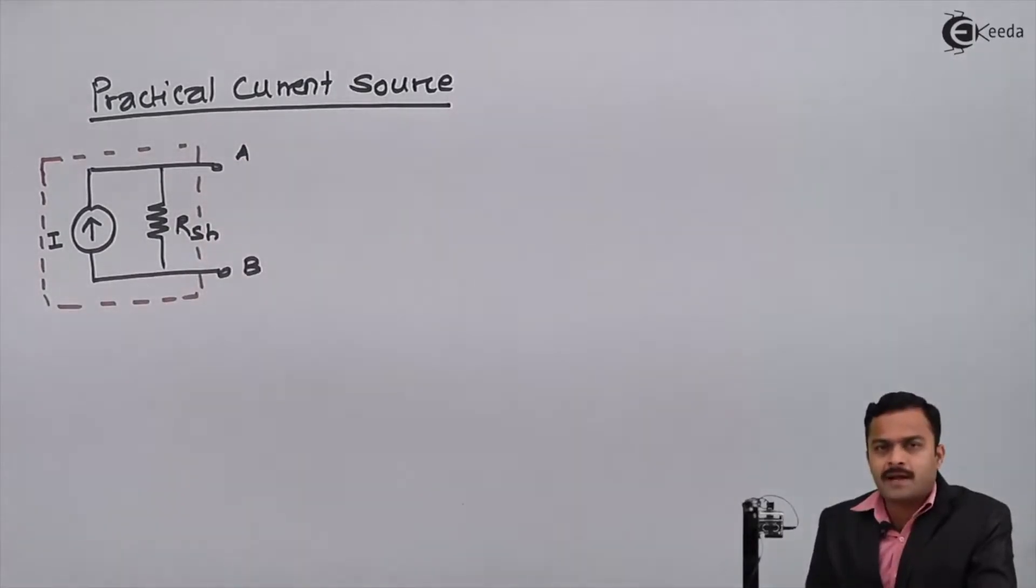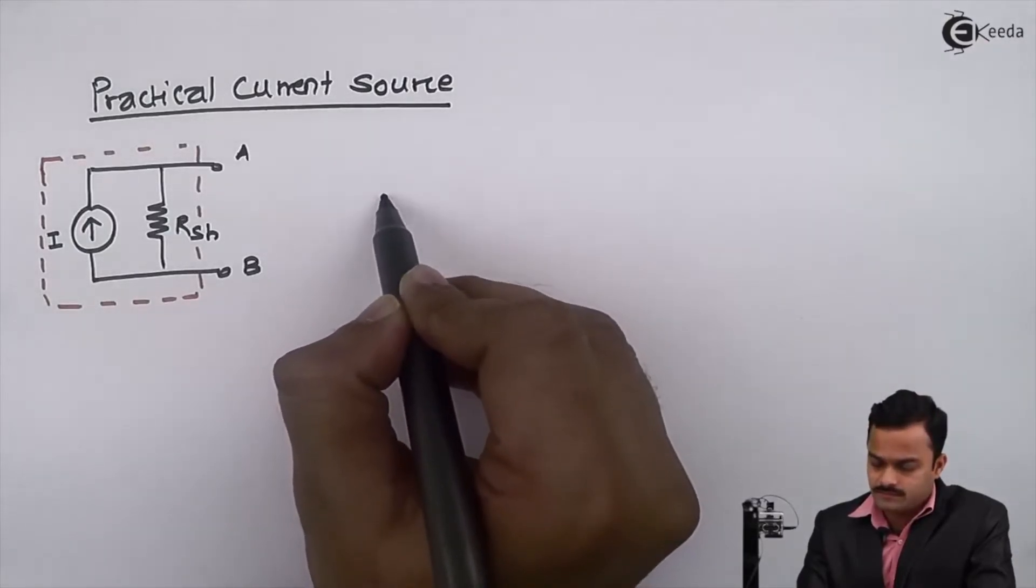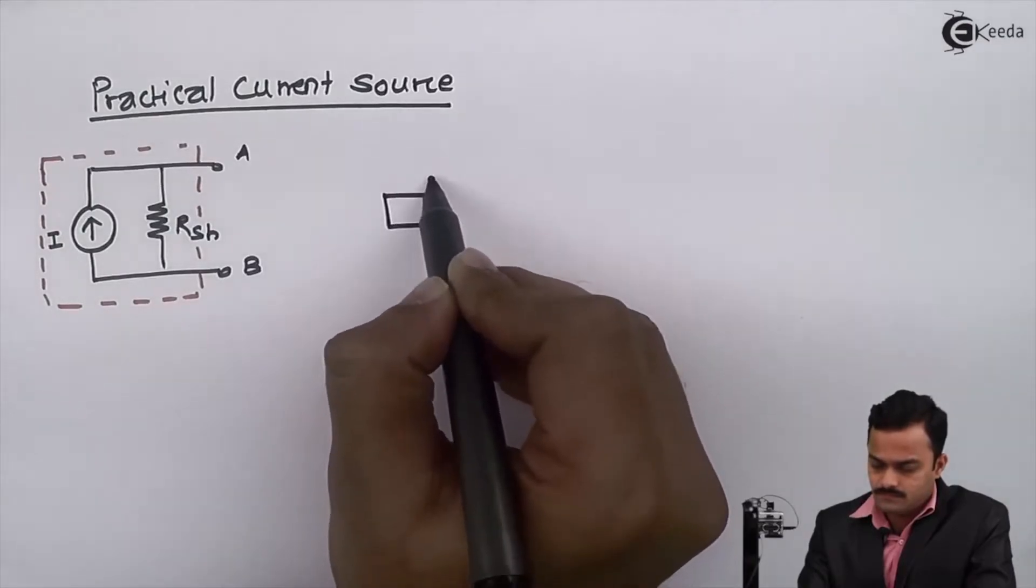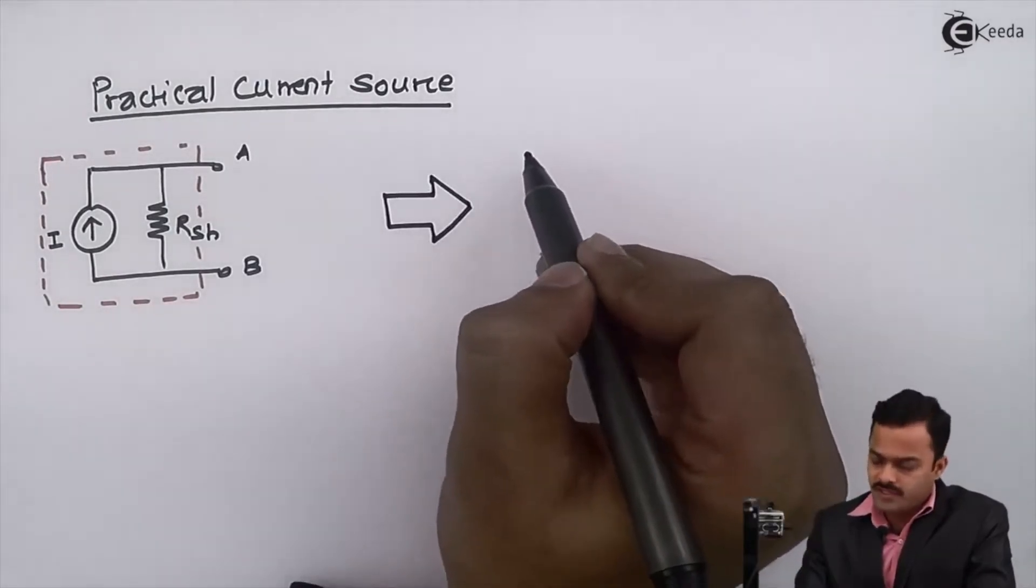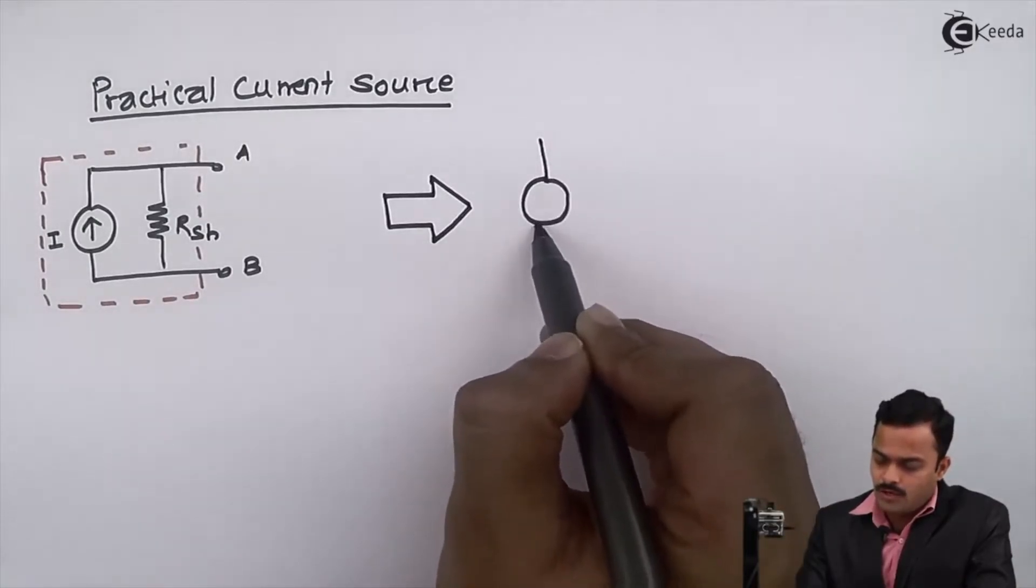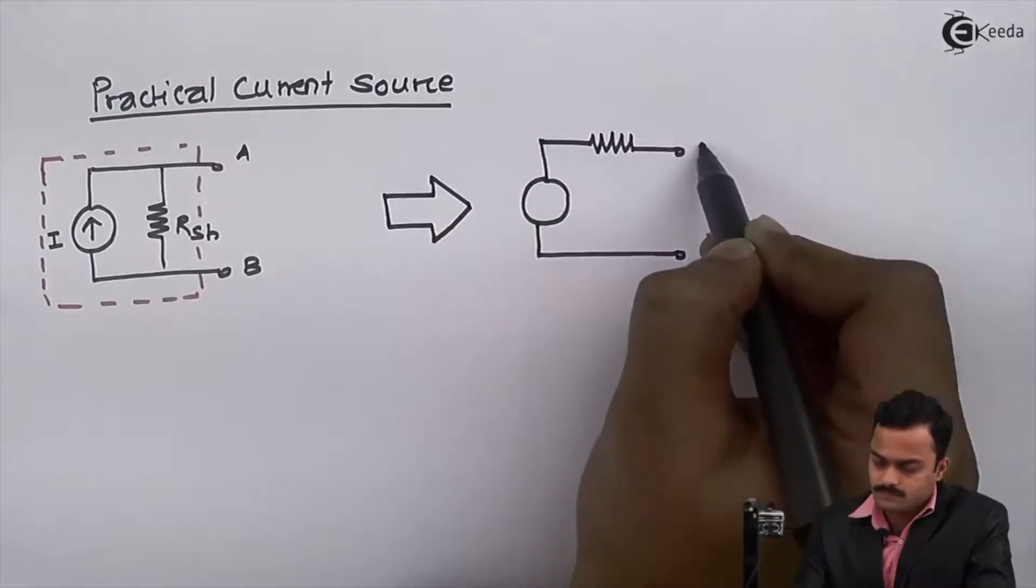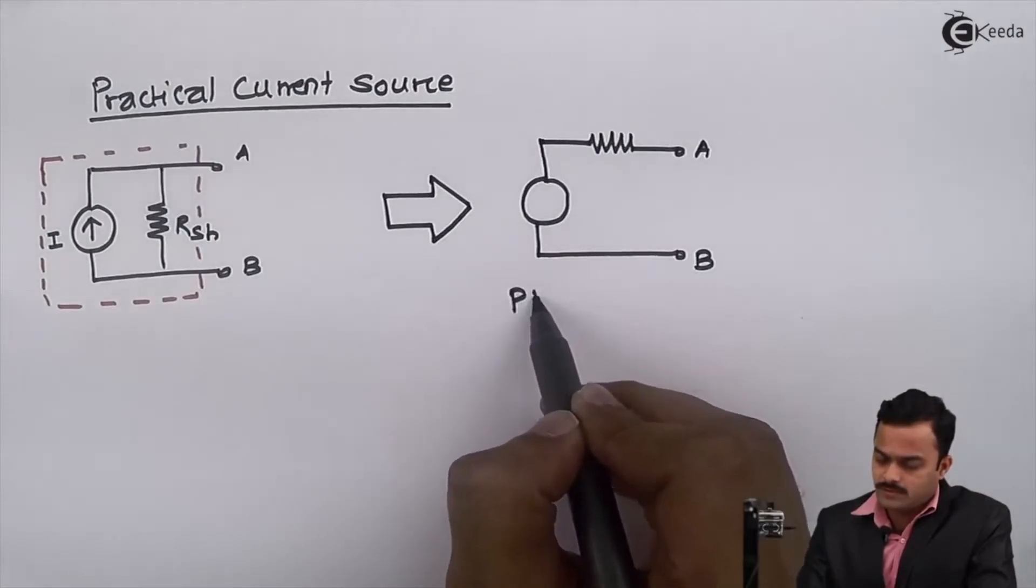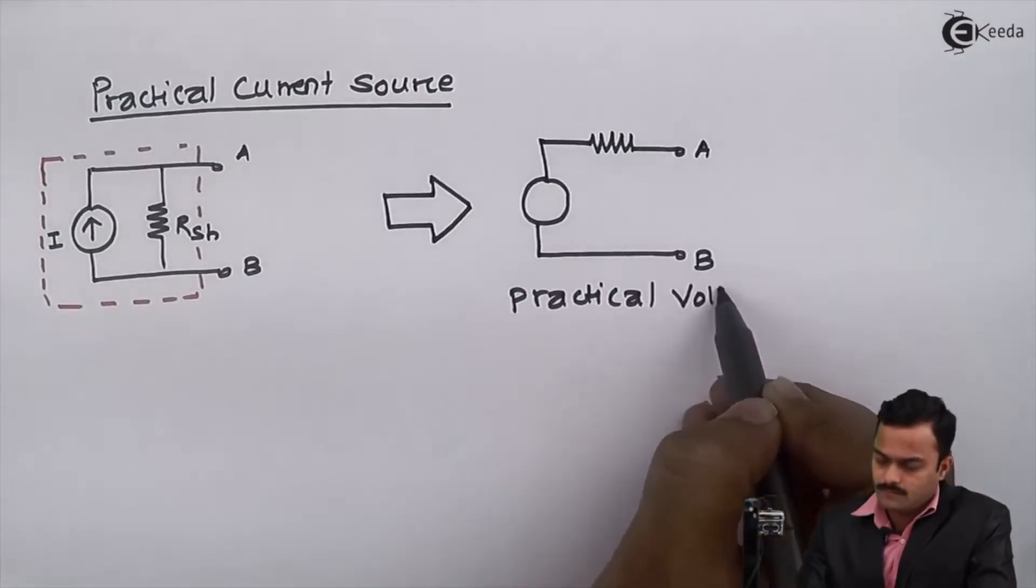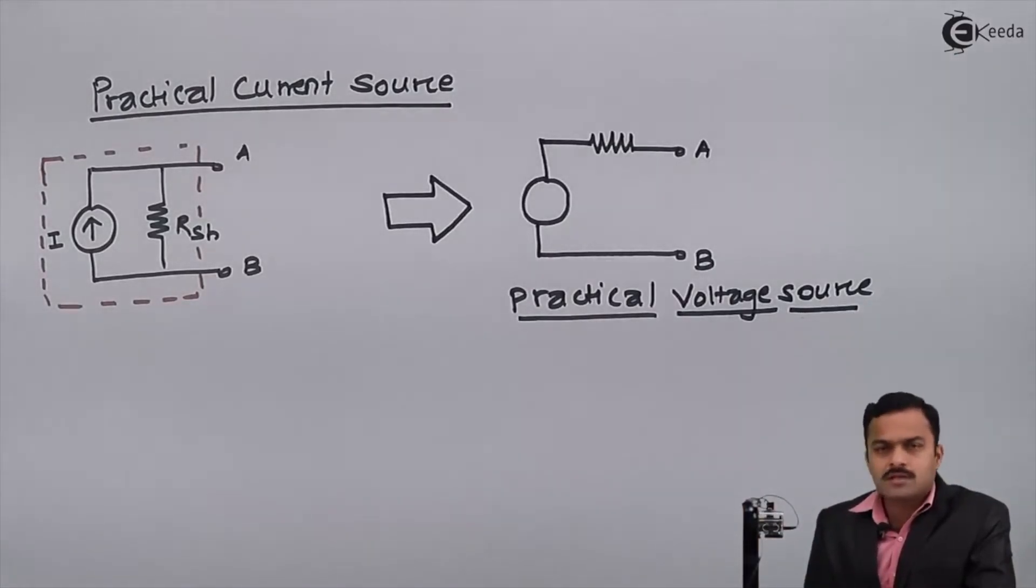This practical current source I'm supposed to transform to an equivalent practical voltage source. So first I will draw a practical voltage source. Now see the difference, because not just drawing is enough, we need to correlate this term.